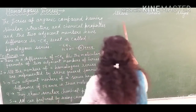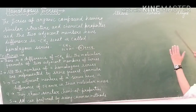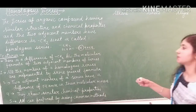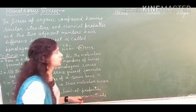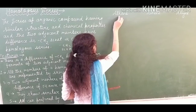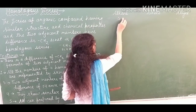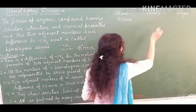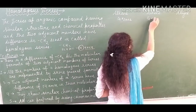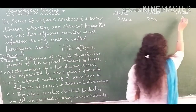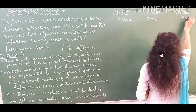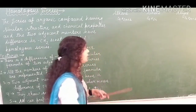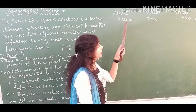Now we will look at the homologous series of alkane, alkene, and alkyne. The general formula followed by alkane is CₙH₂ₙ₊₂. In terms of alkene, the formula is CₙH₂ₙ. And in terms of alkyne, the formula to be followed is CₙH₂ₙ₋₂. These are the general formulas for alkane, alkene, and alkyne.